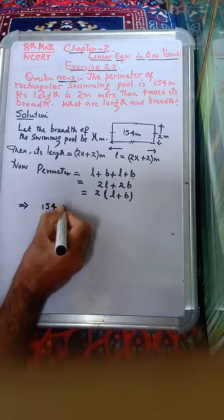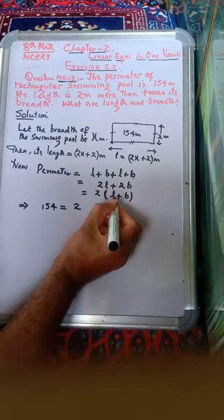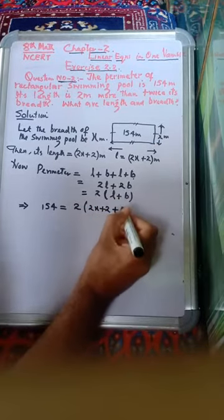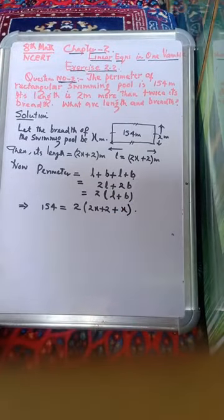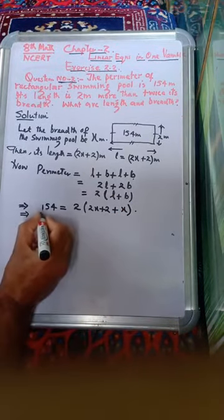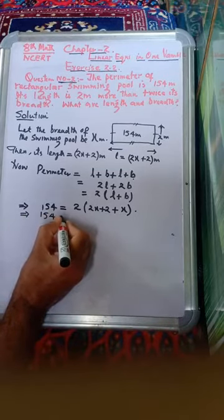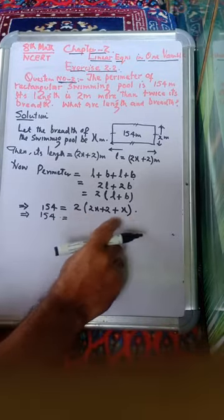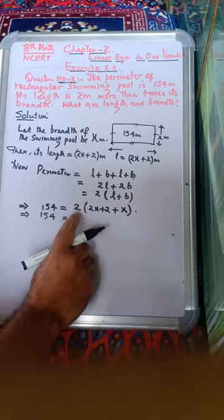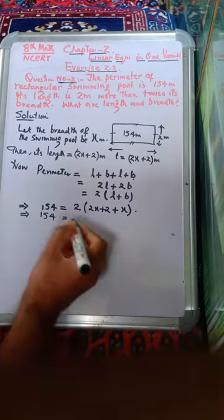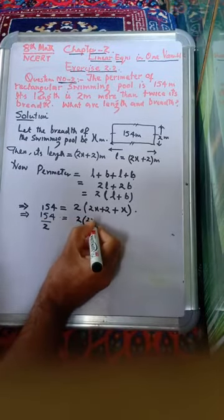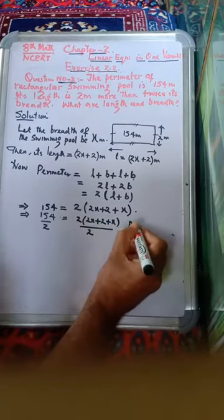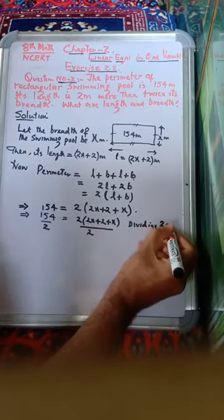So 154 equals 2 times (length plus breadth). Now length is equal to 2x plus 2, and breadth is equal to x. So 154 equals 2 times (2x plus 2 plus x). We can eliminate the 2 by dividing both sides by 2. So (2x plus 2 plus x) divided by 2 — dividing 2 on both sides.